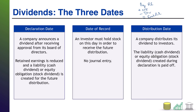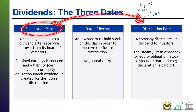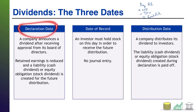That brings us to the distribution date — this is when the company actually pays out the dividend to the investor. You remember that liability or equity obligation created on the declaration date? This is the day you pay it off, so you debit those accounts to pay them off, just like you would pay off any other liability. Then you credit cash if paying in cash, or credit stock if paying out by issuing more stock.